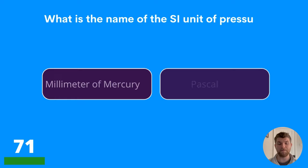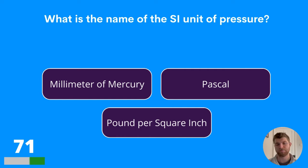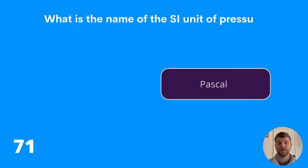Question seventy-one: what is the name of the SI unit of pressure? Millimetre of mercury, pascal, or pound per square inch? The answer is pascal.